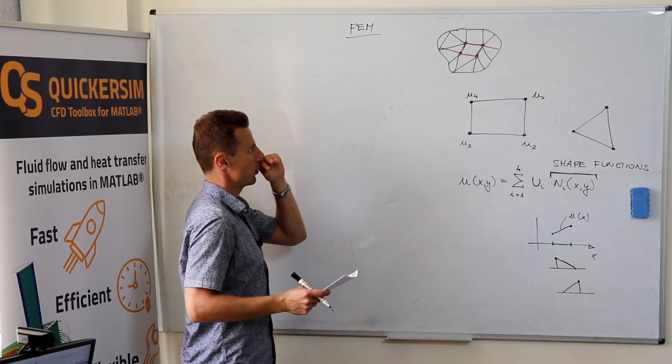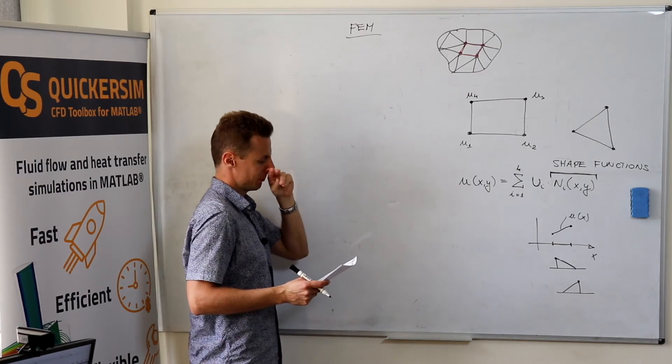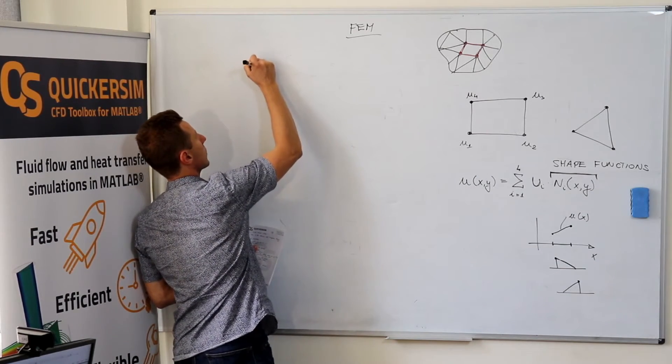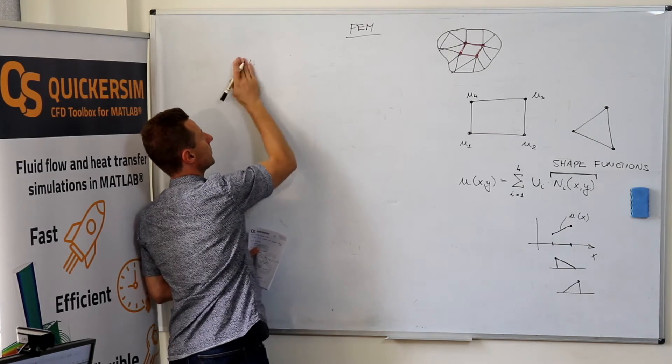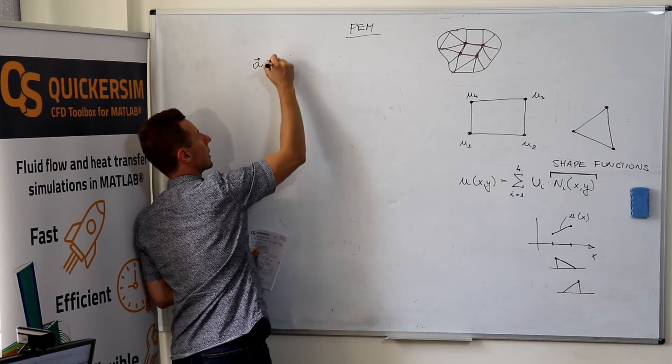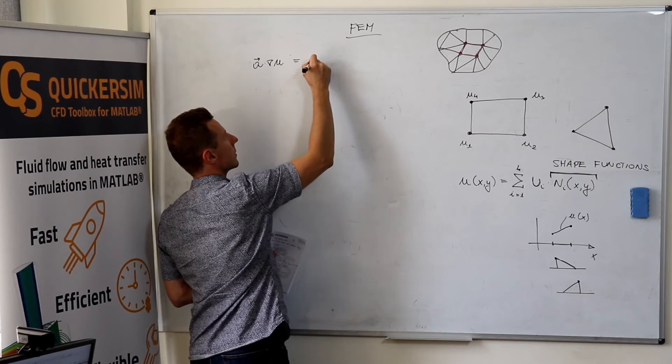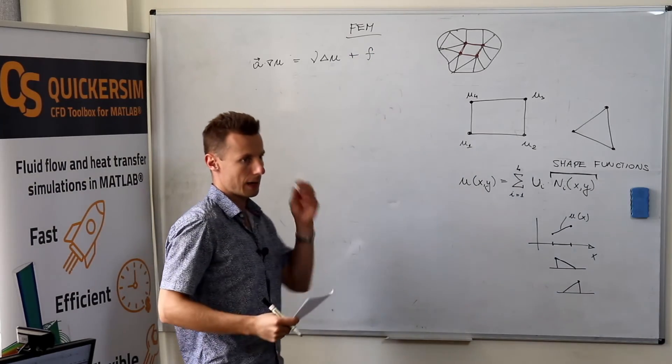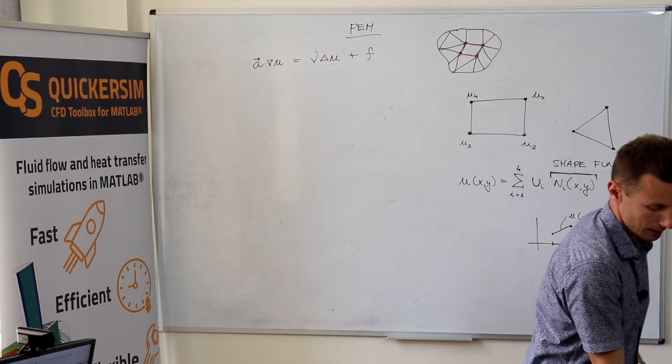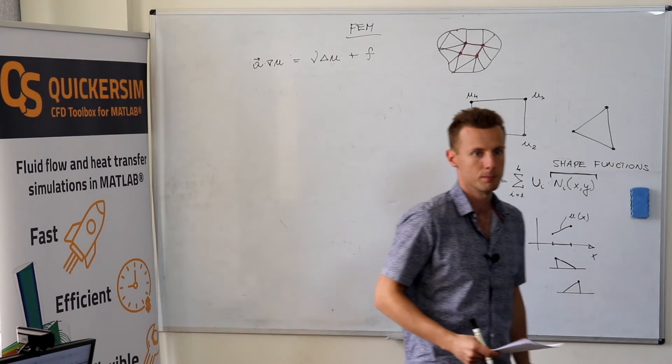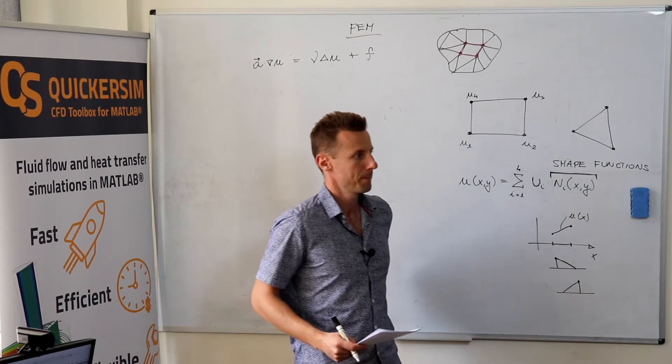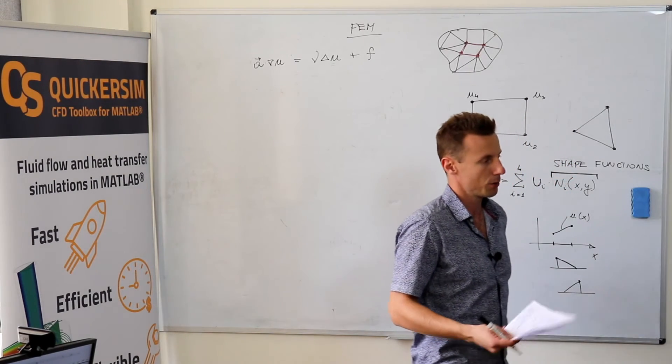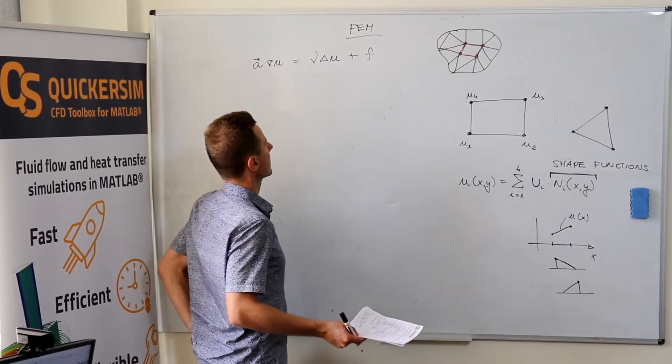So, right now, let me move to our famous transport equation. Let's start with the differential equation: a times gradient of u equals diffusivity, del squared u, plus f. And how did we derive the finite volume method? We integrated it over a cell. Exactly. We have integrated this equation over cells, over the cell area, and computed the fluxes.